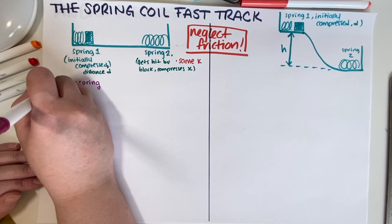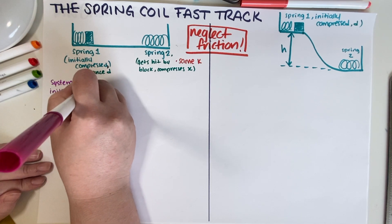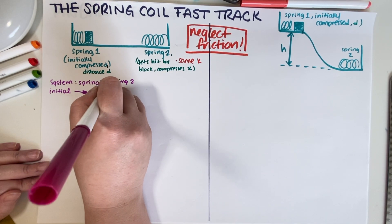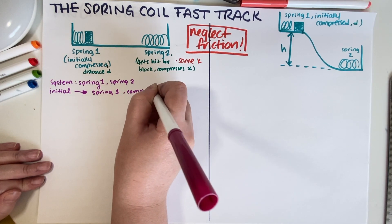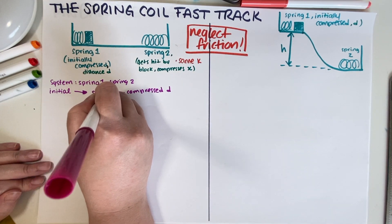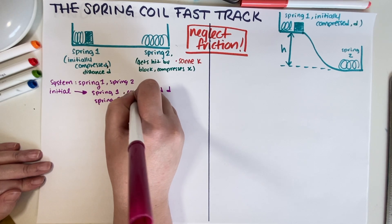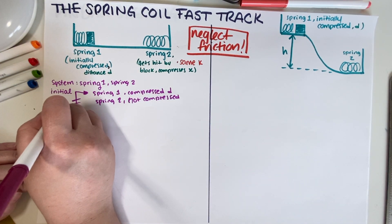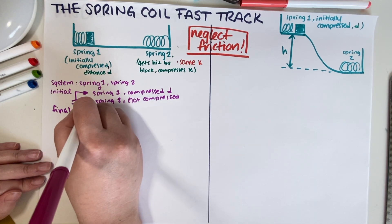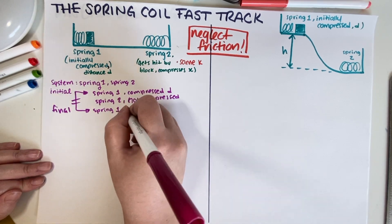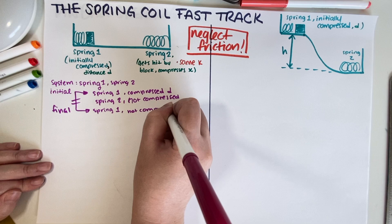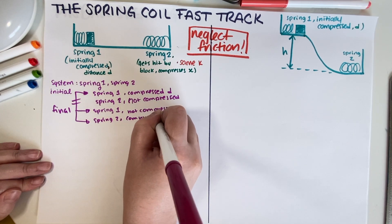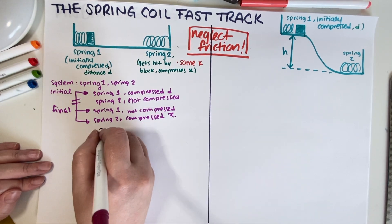Now for our initial state: spring one is compressed a distance d, and spring two is not compressed. For the final state: spring one is not compressed, and spring two is compressed a distance x. So now we do the actual energy bubble diagram.